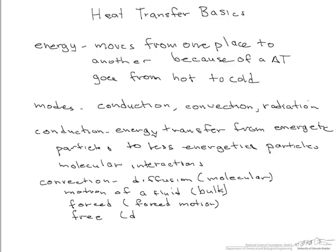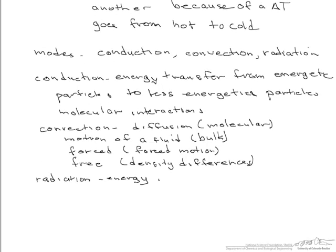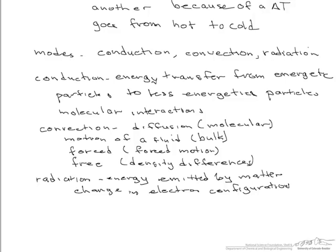So the final form of heat transfer is radiation. And radiation is energy that's emitted by matter. And this energy is caused by a change in electron configurations. What's different from this method of heat transfer is it doesn't need a material medium. In fact, what it works best in is a vacuum.